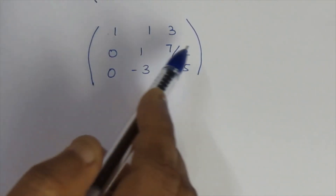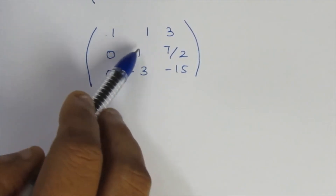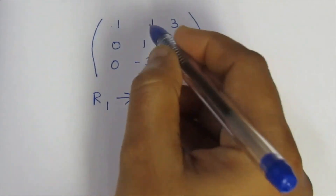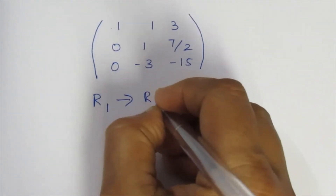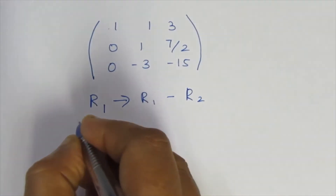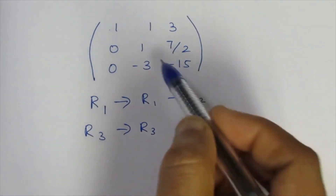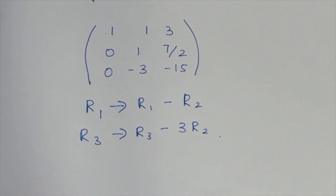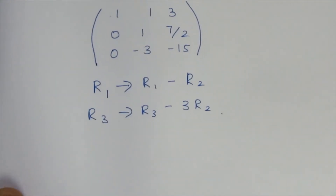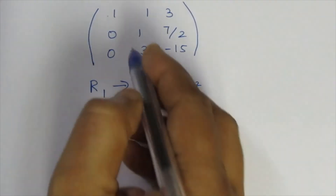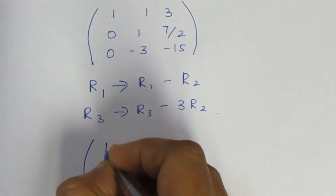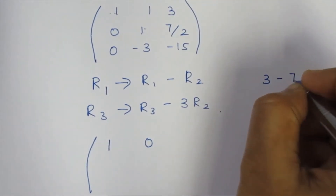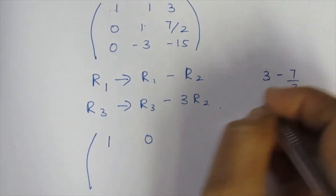So this is 0, and this is 1. We solve row 3 now. Row 3 becomes row 3 minus 3 times row 2. This gives 0 in that position. The change yields minus 1 here. So 3 minus 7 by 2: if we work out minus 1 by 2, we get 3 minus 7 by 2, which is minus 1 by 2.